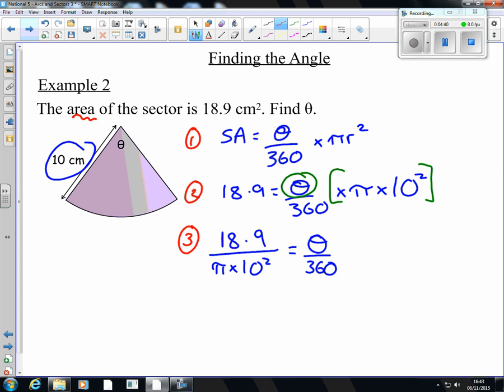And then we need to cancel out that 360. So that's been divided at the minute. So we need to times. So it's 18.9 over pi times 10 squared. And we're multiplying by 360. So we're left with theta by itself.